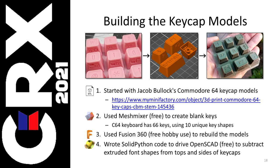Then I used Mesh Mixer — a free tool — to create blank keys by scrubbing the Commodore shapes off. Then I used Fusion 360, the free version, to rebuild these models. I took these simple models and made a more complex model with a whole bunch of triangles, because in step four I used a program called OpenSCAD, and OpenSCAD likes to blow up on STL models. Even STL models built with OpenSCAD seem to make OpenSCAD blow up. But the trick is to rebuild them with lots of triangles first. Then I used SolidPython to drive OpenSCAD to take these font shapes, extrude them, move them into the keycap surface, and subtract the two shapes from each other to carve out those shapes you see there. So all free tools.